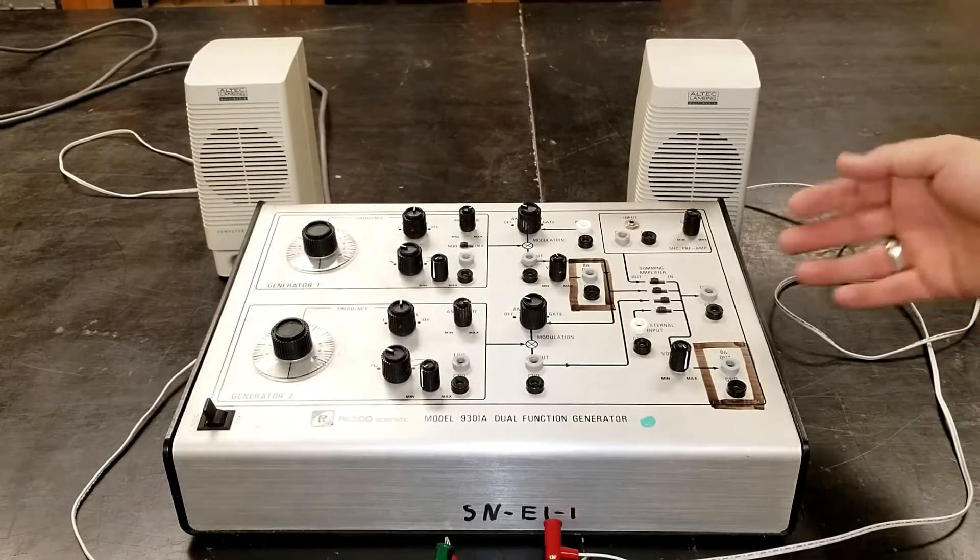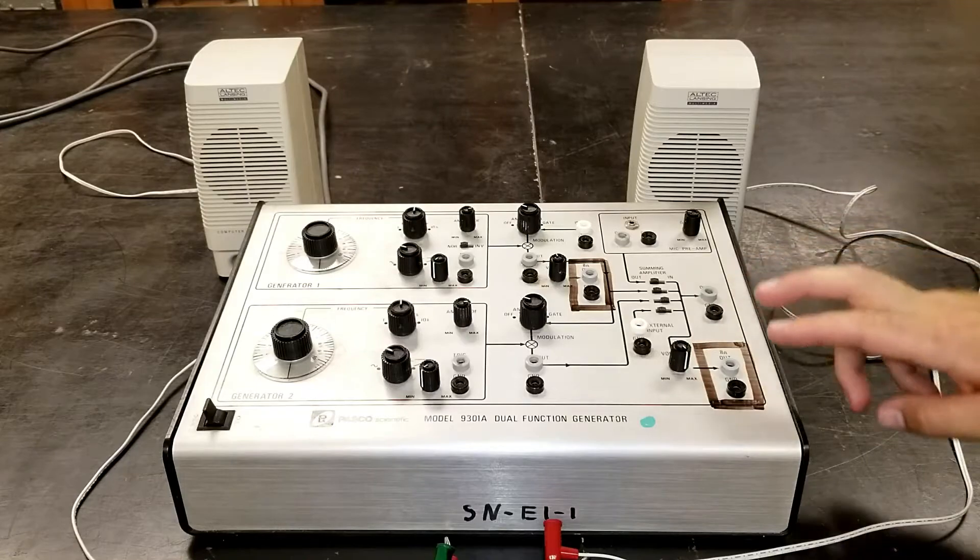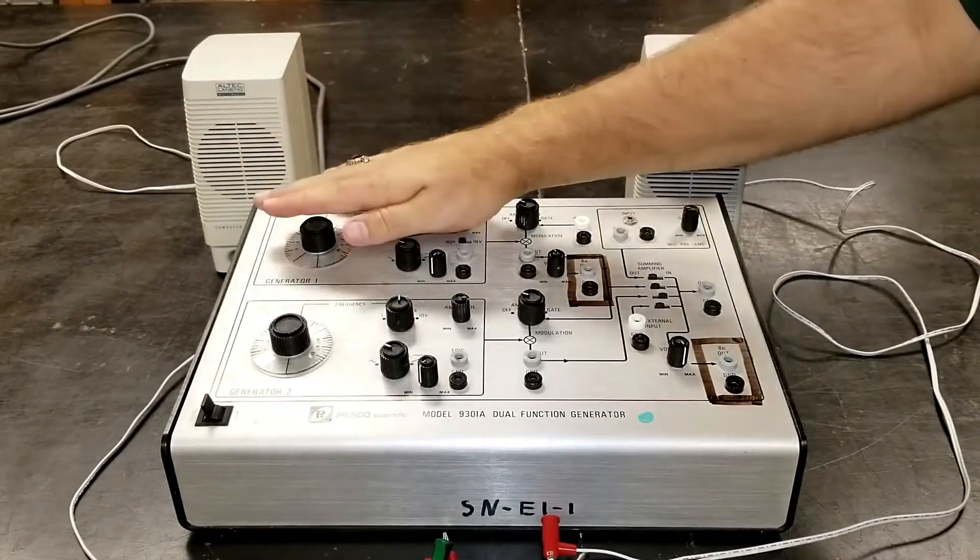The dual function generator has a location for each speaker blocked out in black. This location is controlled by these dials, and this location is going to be controlled by these dials.